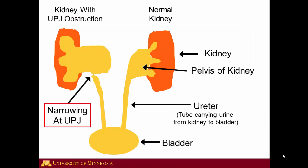In order to understand UPJ obstruction, you first have to understand the anatomy of the normal kidney, as well as the kidney with UPJ obstruction. So let's start with the normal kidney. First you have the normal parenchyma of the kidney, seen here in orange. This is the part of the kidney that makes urine, and when the urine is made, it comes down into the collecting system, which is shown here in the pelvis of the kidney, and then it goes down the ureter to the bladder.